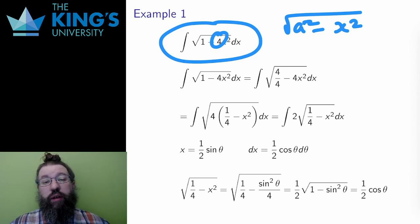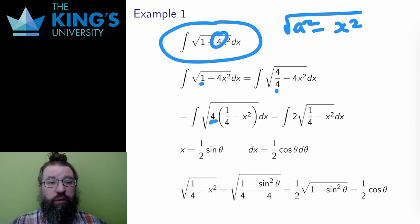Well, I can write the 1 as 4 over 4, and then I can factor 4 out of both terms. And then I can factor the 4 out of the square root, and now I have an a squared minus x squared, where a is 1 half, so that a squared is 1 quarter.